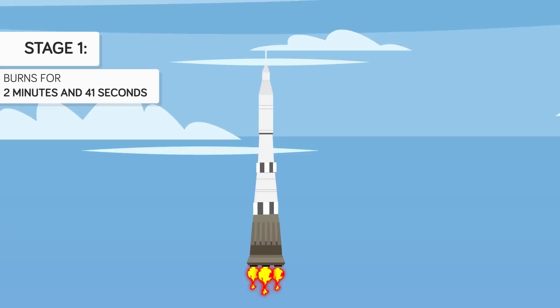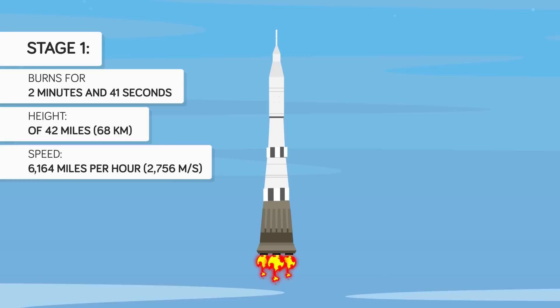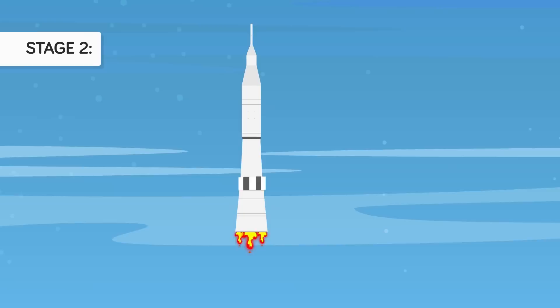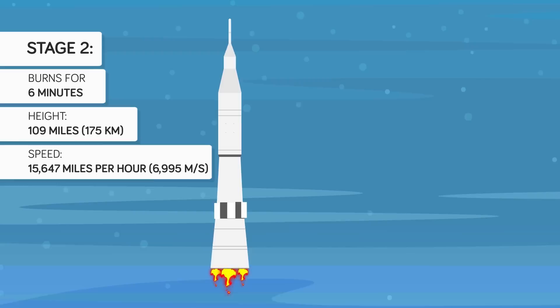According to the plan, the first stage burns for 2 minutes and 41 seconds, shooting the rocket to an altitude of 42 miles, at a speed of 6,164 miles per hour. At that point, explosive separators would disengage the first stage from the second stage, shedding tens of thousands of pounds of dead weight. The second stage's five engines would then flare to life, accelerating the spacecraft for 6 minutes to a height of 109 miles, and 15,647 miles per hour, which is almost orbital velocity or the speed needed for an object to remain in orbit.